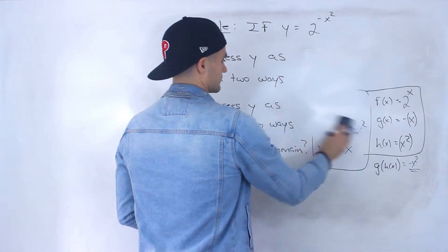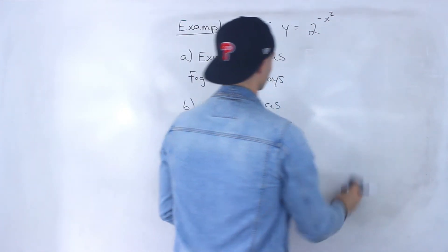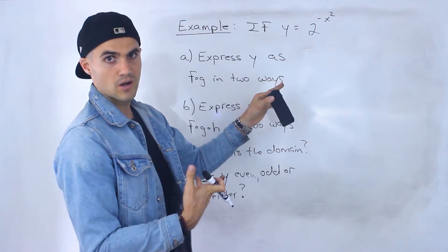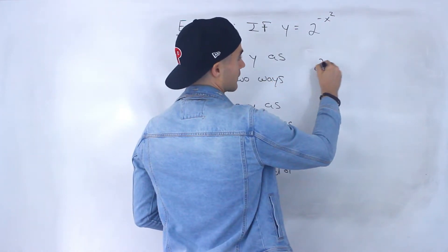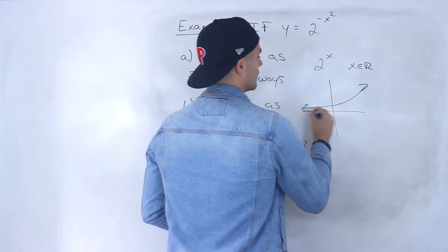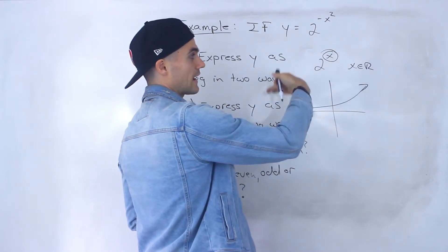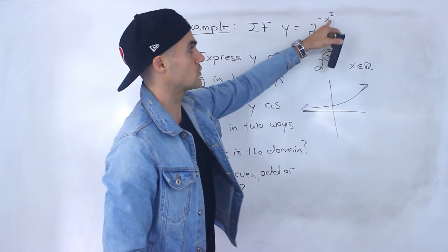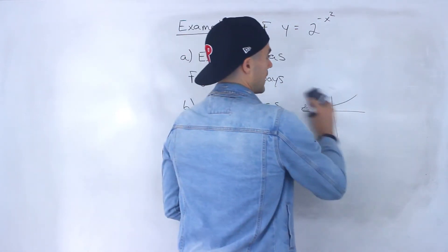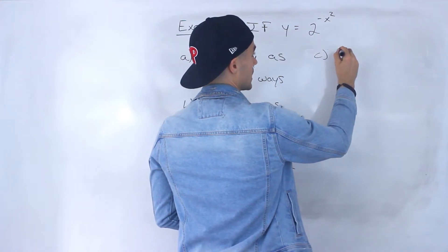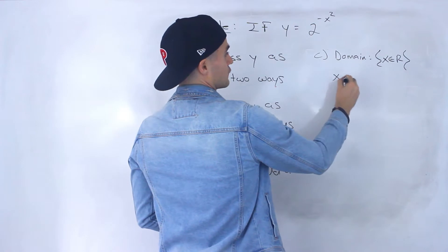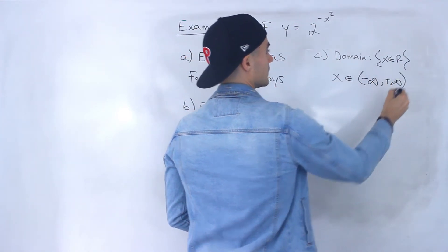Now part C is asking: what is the domain of this function? Well, notice x can be anything — x can be negative, x could be 0, and x could be positive. We know that 2 to the power of x has domain x ∈ ℝ. So we could plug in anything for this x value — it could be negative, 0, or positive. So if it's negative x squared, there's no restriction. So the domain in this case is x ∈ ℝ, or in interval notation, x is an element from negative infinity to positive infinity.